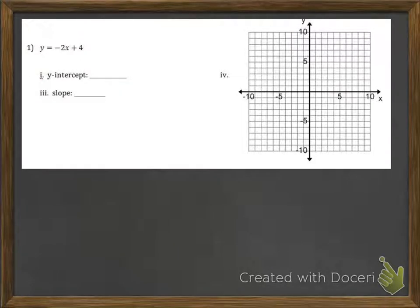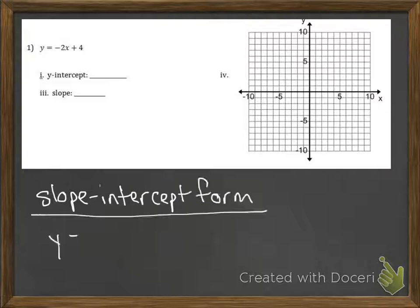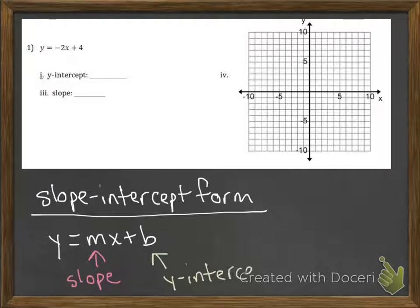In problem number one, we're supposed to sketch a graph of the equation by first identifying the y-intercept and the slope. This is written in slope-intercept form, which we know as y equals mx plus b, where the m value represents the slope and the b value represents the y-intercept.